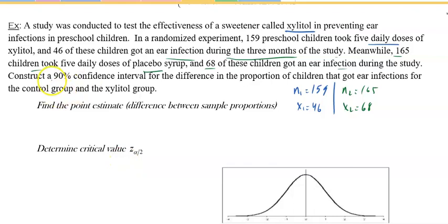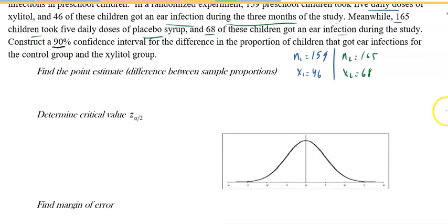Now construct a 90 percent confidence interval for the difference of proportion that got ear infection for the control groups. All right, so find the point estimate, the difference between them. p1-hat minus p2-hat is 46 divided by 159 minus 68 divided by 165, which is, if you plug in a calculator, negative 0.123.